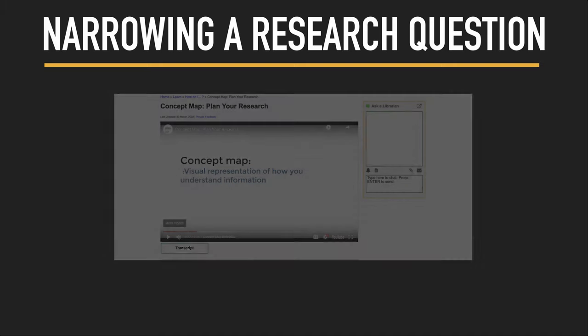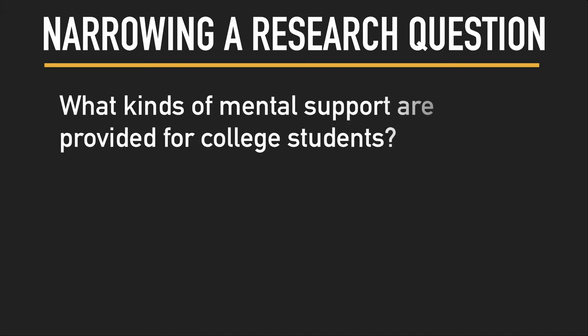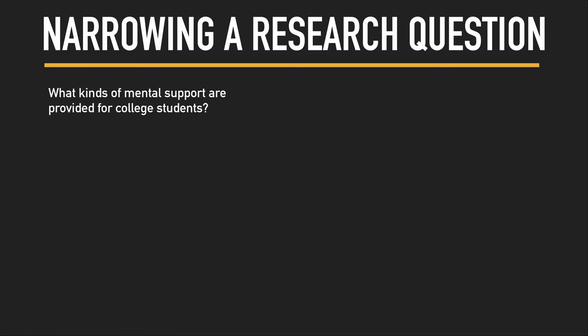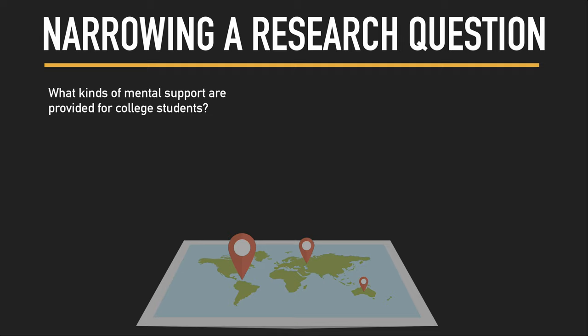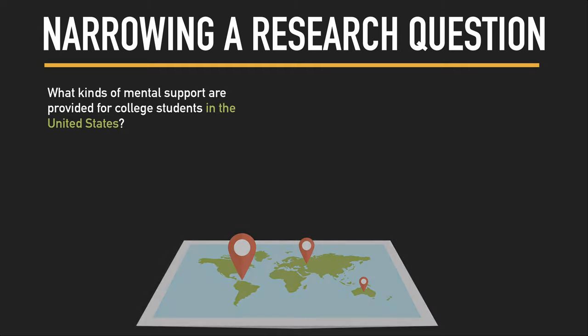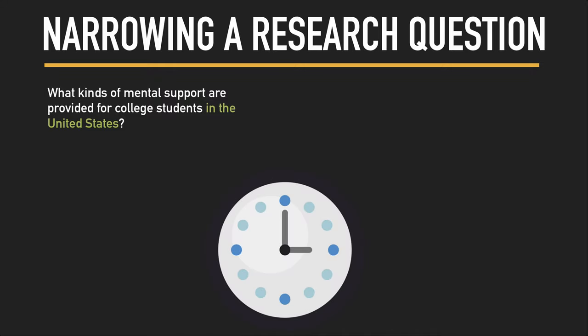There are additional ways to narrow a broad research question. Let's use this example: 'What kinds of mental support are provided for college students?' This question needs some work. First, consider geography — you might want to focus on a particular country or region; here, we'll focus on the United States. Time is another factor: your preliminary research may help you narrow the time frame. For our example, we want to focus on how access to online counseling has impacted students since COVID-19.